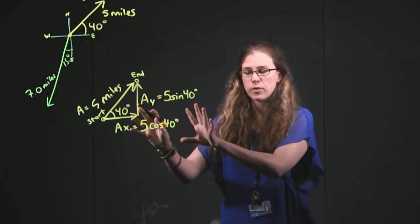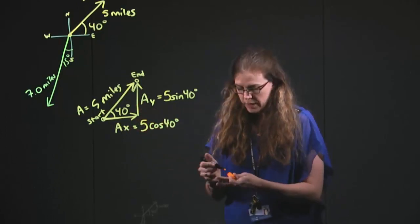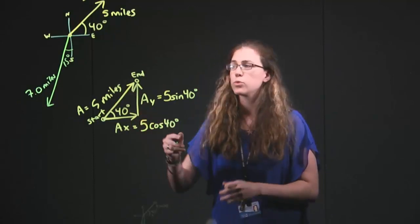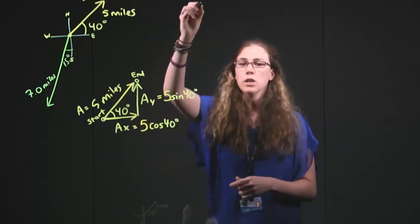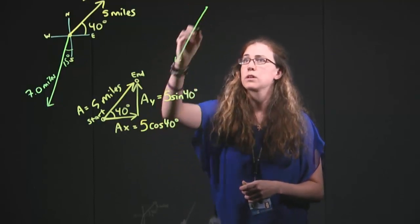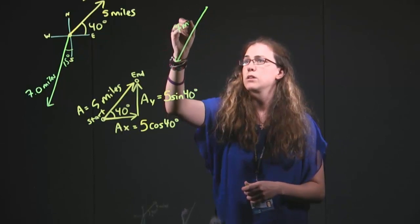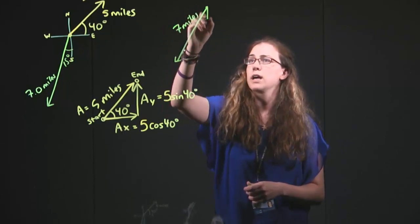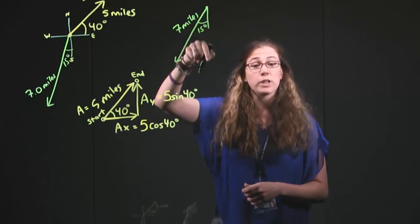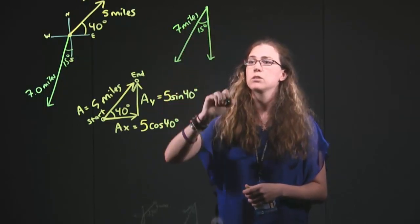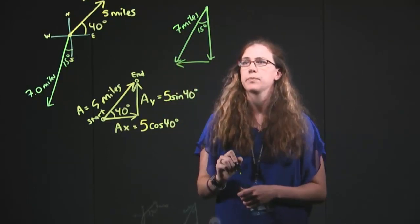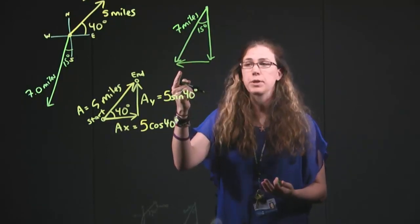So we've taken care of that for now. We can then go over to our other vector. And it doesn't need to be anywhere next to this one, we're just trying to break it up into pieces. So I'm going to draw it up here. And so it's still this 7 miles long, and we still have this 15 degrees. We see that it points more down than it does up, so this piece points down. We see it points more left than it does right, that piece points left.